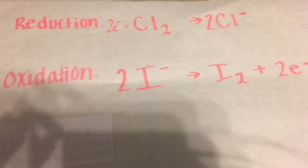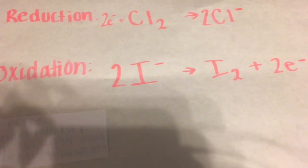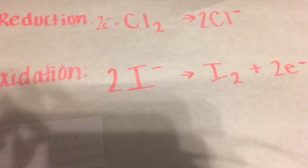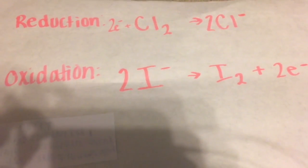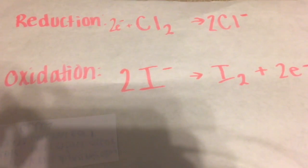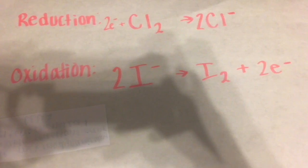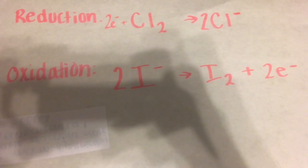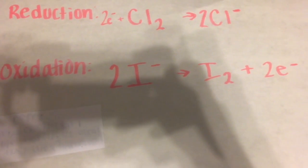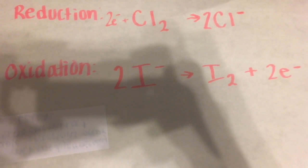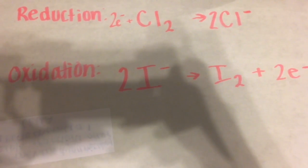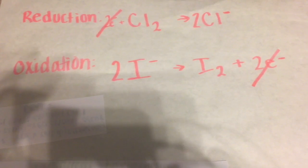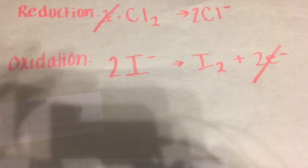Alright, so now we have added in electrons on both sides so that the charges on both sides are equal to each other. So each one has a charge of negative two for both half reactions. So now we are going to combine the reactions, so we're going to cross out anything on opposite sides of the arrows that would cancel each other out. And then we're going to just mush them together the way that you would do an addition problem. Since both half reactions have two electrons on both sides, we're going to just go ahead and cross those out.